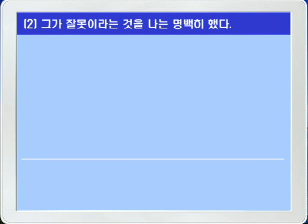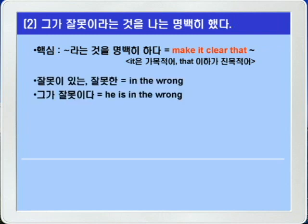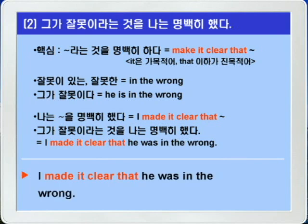2번입니다. 그가 잘못이라는 것을 나는 명백히 했다. 이 영작의 핵심은 'make it clear that 뭐뭐'입니다. 가목적어 it을 쓰고 목적보어로 clear, 진목적어로 that절을 씁니다. 잘못이 있다는 in the wrong을 써서, 주절이 과거이므로 that절도 was로 씁니다. 정답: I made it clear that he was in the wrong.